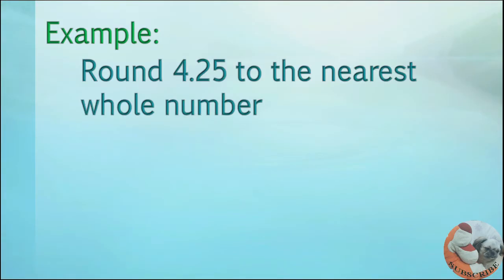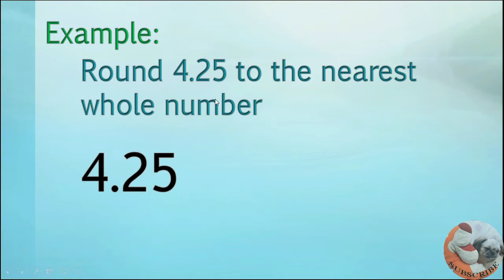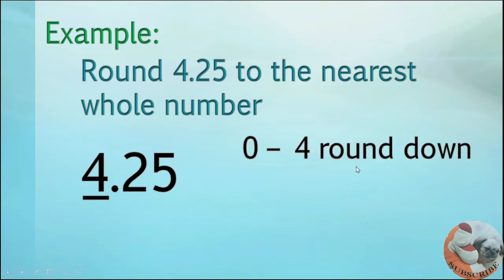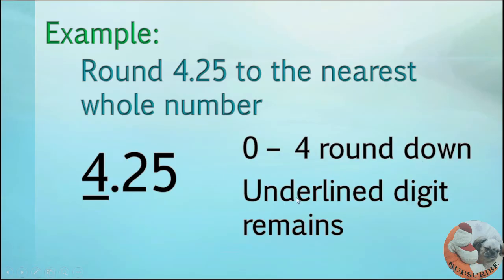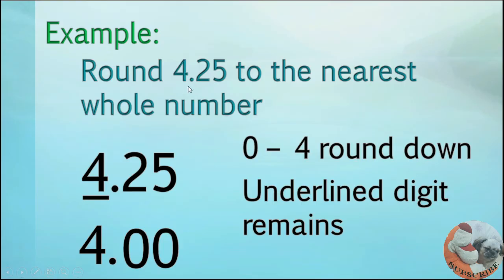Another example: round 4 and 25 hundredths to the nearest whole number. The whole number is 4. What is to the right of 4? It's 2. The rule when it's 0 to 4 is to round down, meaning the underlined digit remains unchanged. So 4 stays as 4. If you round 4 and 25 hundredths to the nearest whole number, your answer is 4.